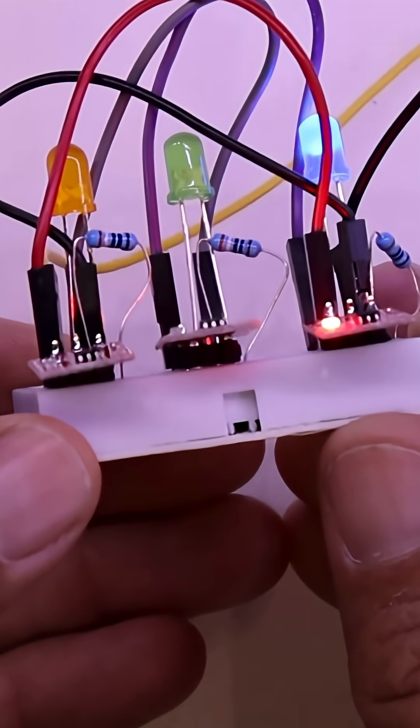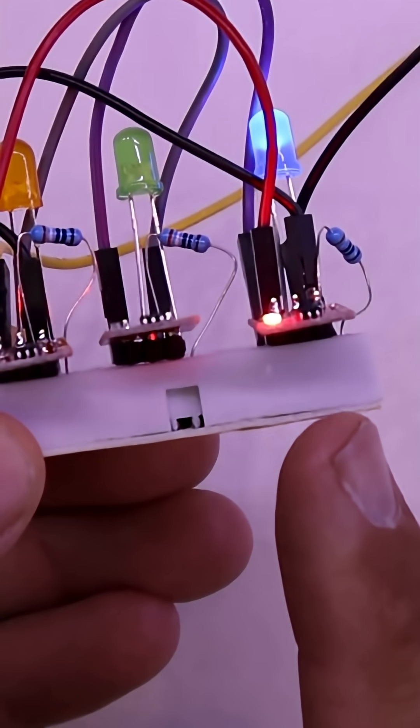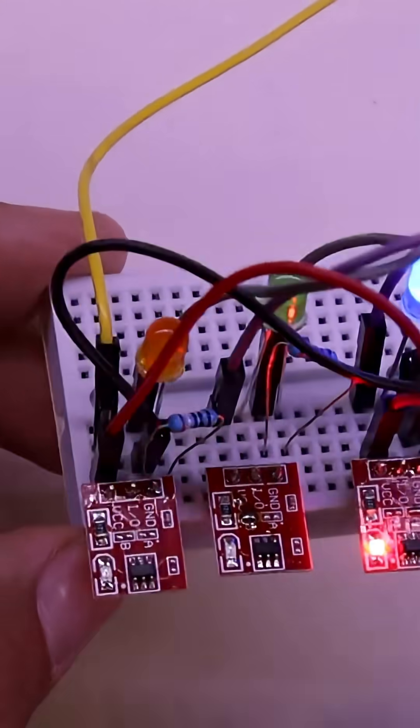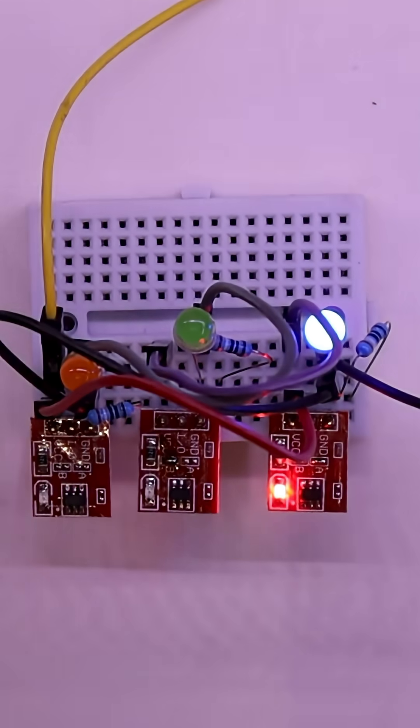Also, these are capacitive touch sensors, and if you get kind of close to them, they trigger. So, that's incredibly useful when you're putting these behind a 3D printed enclosure, and you want to just touch the outside of the enclosure, and it works very well.